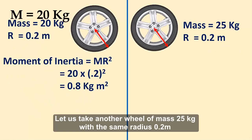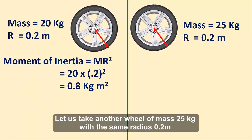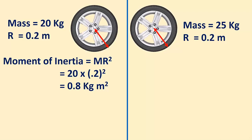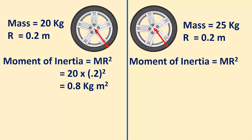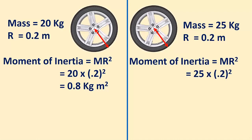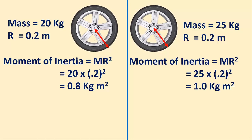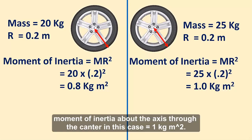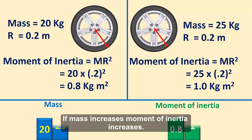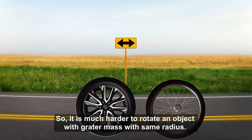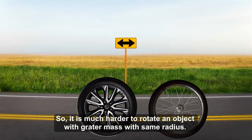Let us take another wheel of mass 25 kg with the same radius 0.2 m. The moment of inertia of the wheel about the axis of rotation is again mr², which is equal to 25 × 0.2², equal to 1 kg·m². Therefore, the moment of inertia about the axis through the center in this case is 1 kg·m². If the mass increases, the moment of inertia also increases. So it is much harder to rotate an object of greater mass with the same radius.